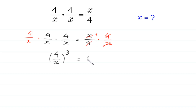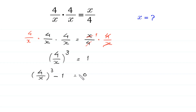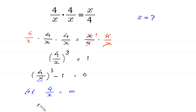Now we move this 1 to the left side. So (4/x)³ minus 1 is equal to 0. We suppose that 4 over x is equal to m. Substituting m in this equation, the equation becomes m cubed minus 1 is equal to 0.